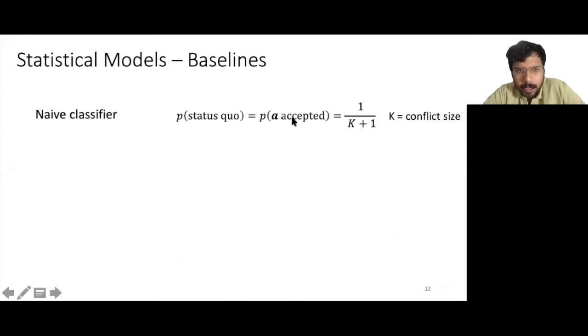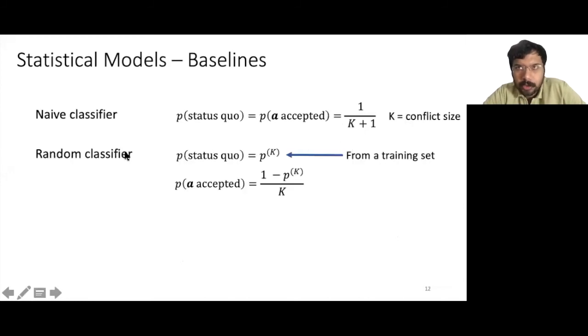We now describe the baselines that we consider in this work. The naive classifier predicts each outcome with the same probability, which is 1 over k plus 1, where k is the conflict size.